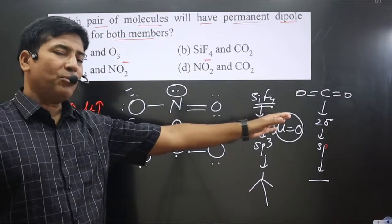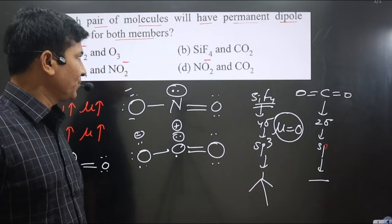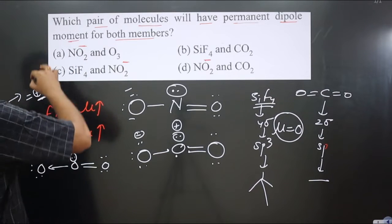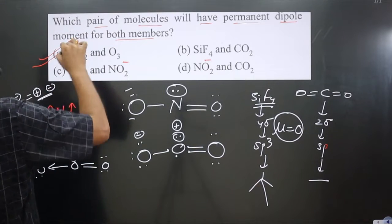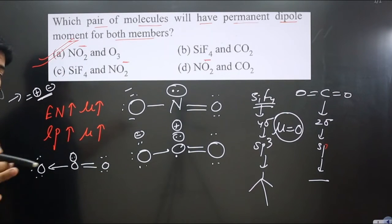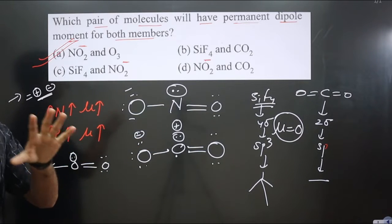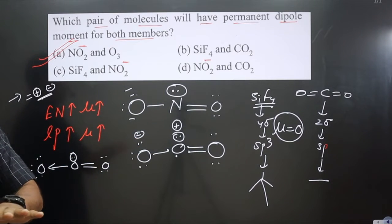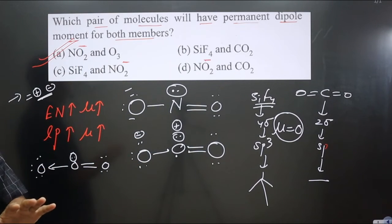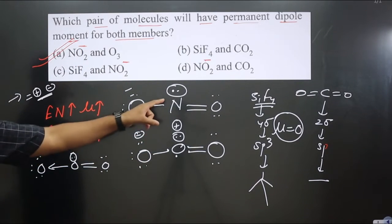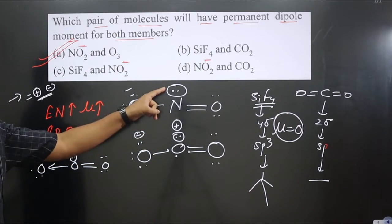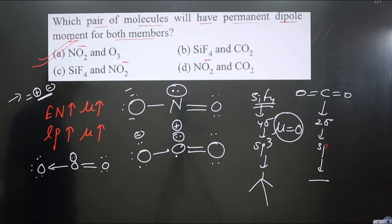So SiF₄ has dipole moment zero, and CO₂ also has dipole moment zero. The first option is correct — both molecules in that pair are polar by nature with non-zero dipole moments, because the central element carries lone pairs. If you like this video, please share and subscribe to the channel.